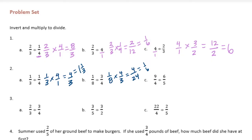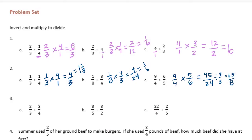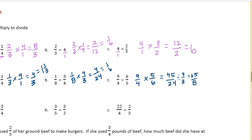9 fourths divided by 6 fifths would be 9 fourths times 5 sixths, or 45 twenty-fourths. We can divide both of those by 3 and get 15 eighths. And then you can really turn it into 1 and 7 eighths.